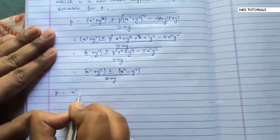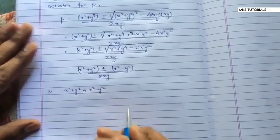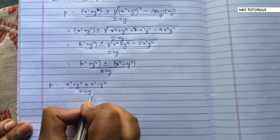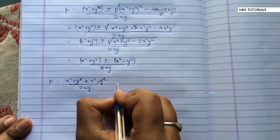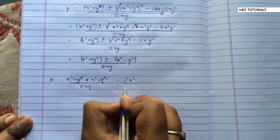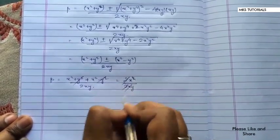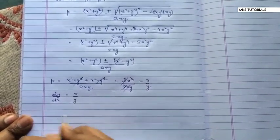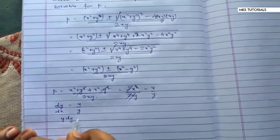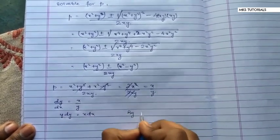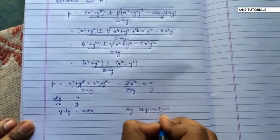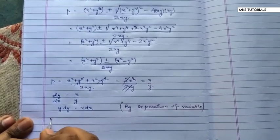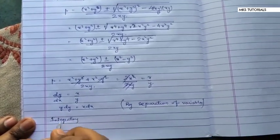पहले case में p = [x²+y² + x²-y²] upon 2xy. इसको solve करो: यह cancel होकर 2x² upon 2xy बनता है, x और x cancel, तो p = x/y, यानी dy/dx = x/y. इसको separation of variables से solve करेंगे.